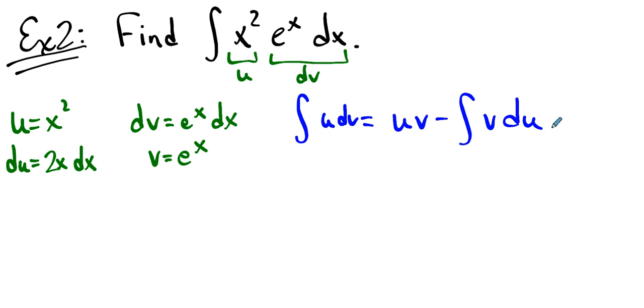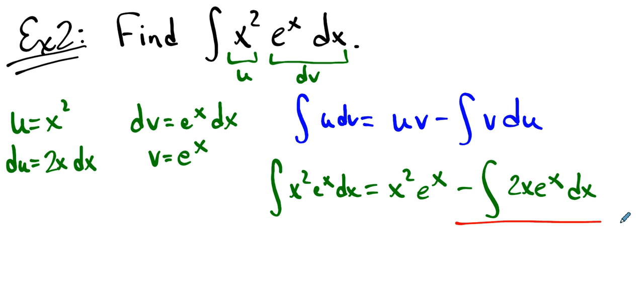So the formula says that the integral of u dv is uv minus the integral of v du. Well, in this case, that means the integral of u dv is uv minus the integral of v du.